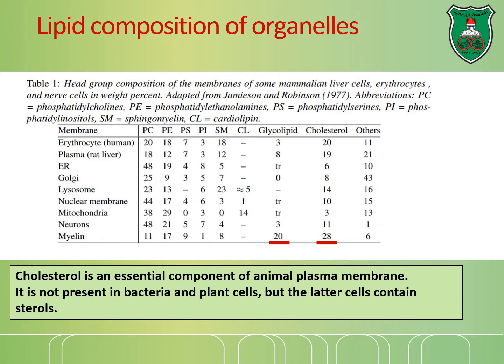Looking at the types of lipids in different parts of the cell, the myelin sheath is mainly composed of a lot of cholesterol and glycolipids. In contrast, mitochondria contain only traces of glycolipids and some cholesterol, but not a whole lot. Cholesterol is a major component of animal plasma membranes and is not present in bacteria or plant cells, although plant cells may contain certain molecules that resemble cholesterol but are not cholesterol.